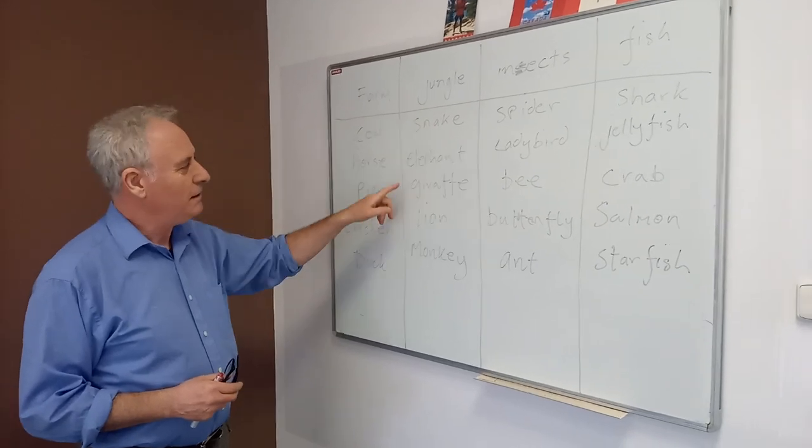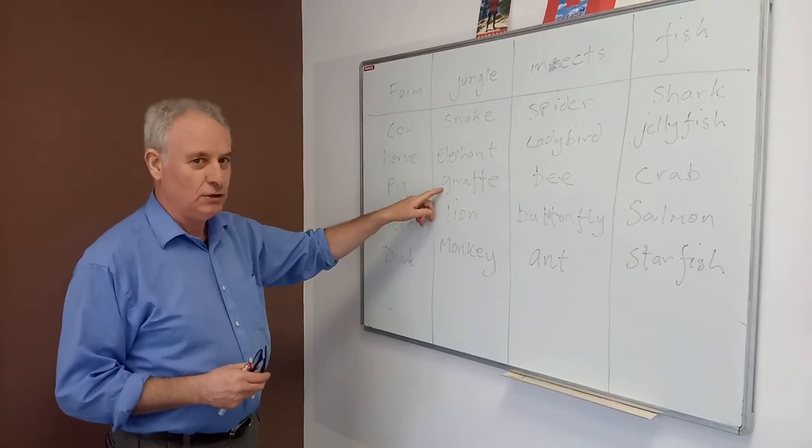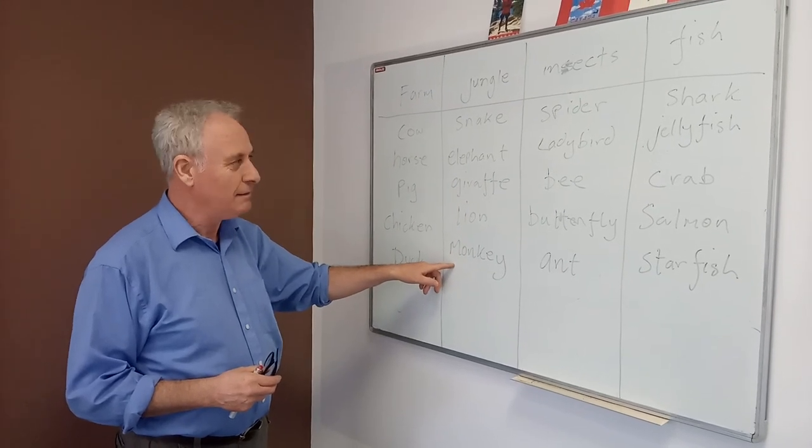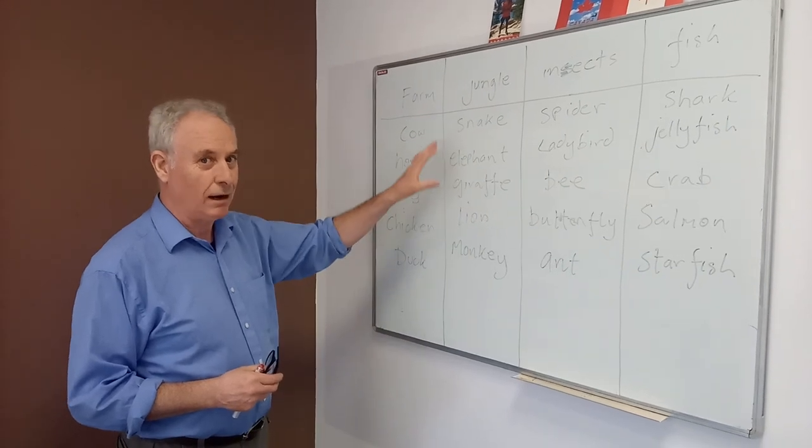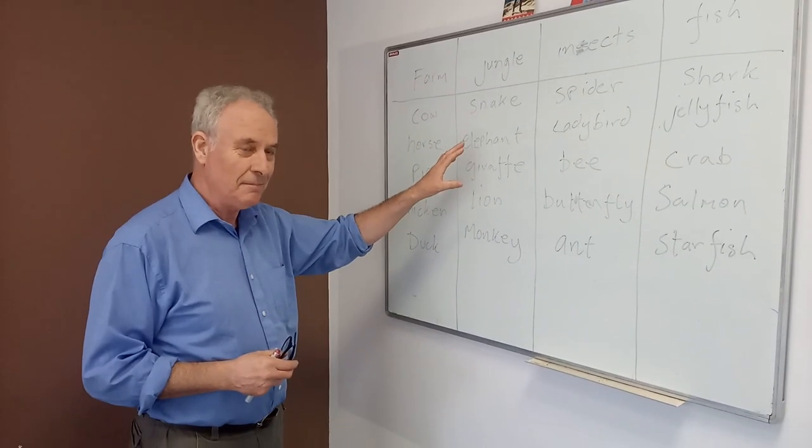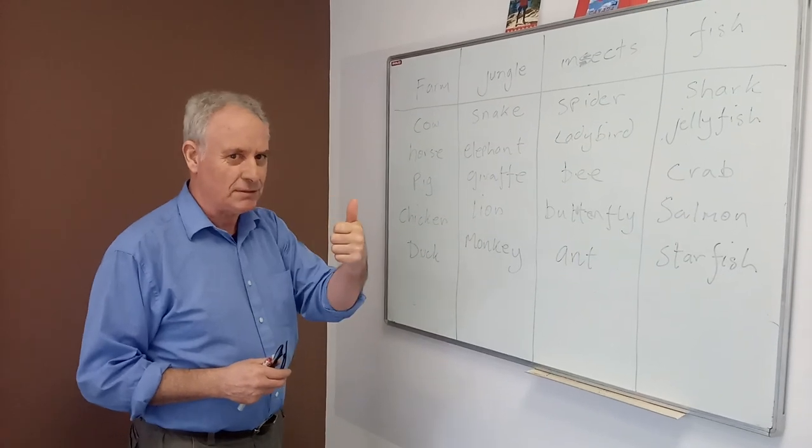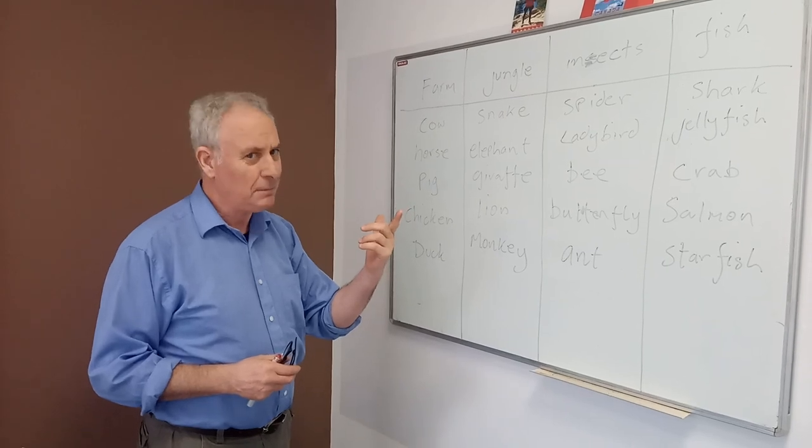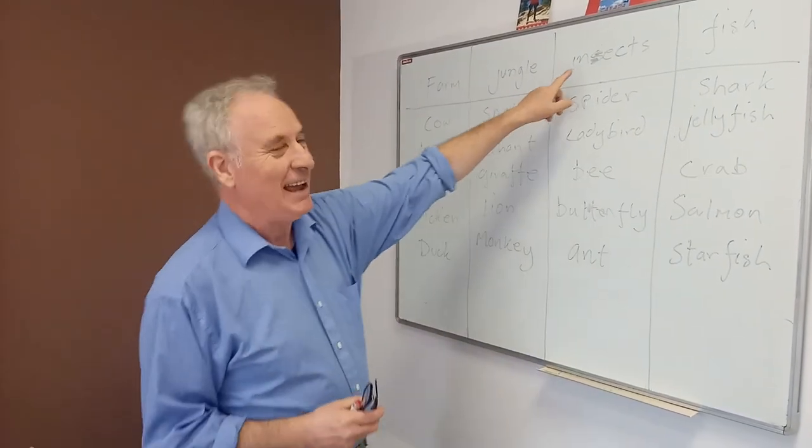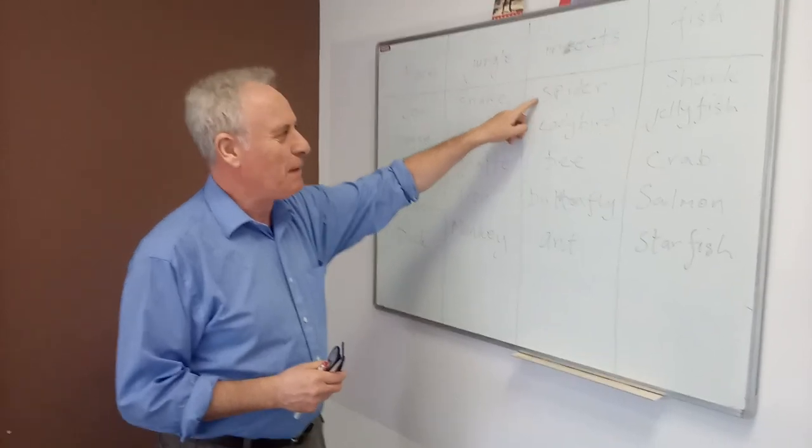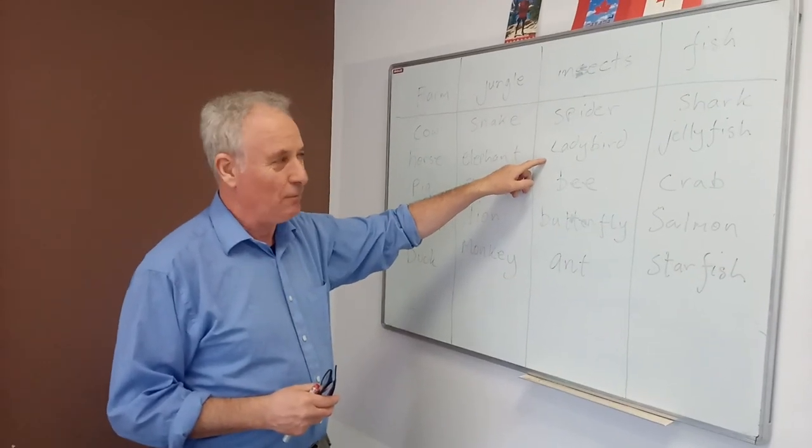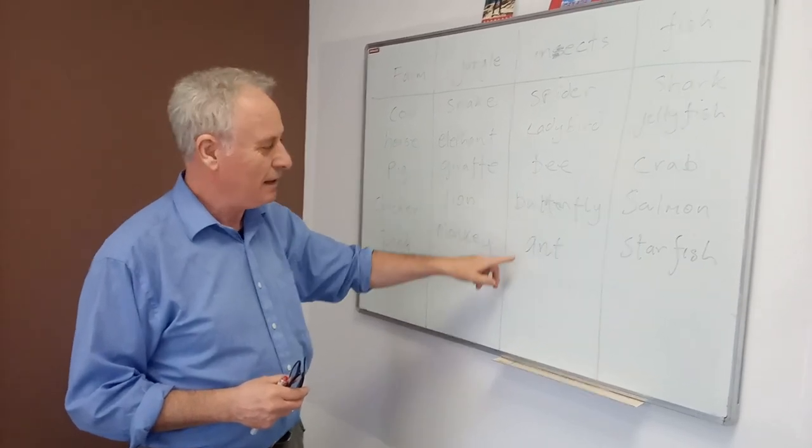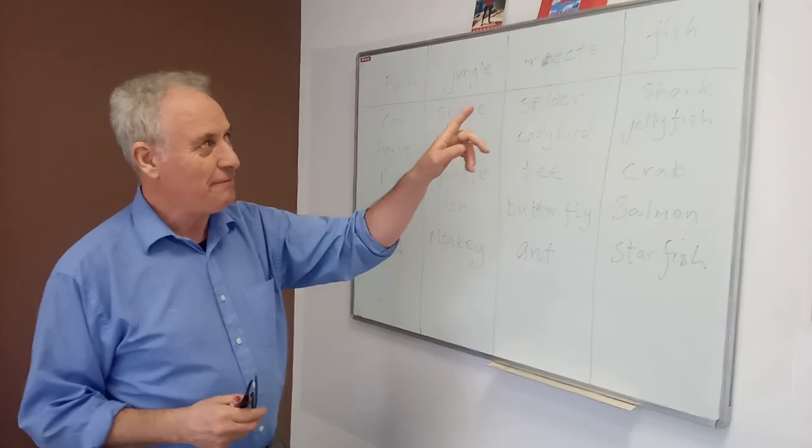Now the jungle. Snake. Elephant. Giraffe. Lion. Monkey. All of these live in the jungle. Did you get a list like that? What else could there be? Rhinoceros. Warthog. Anybody get Warthog? Insects. Spider. Ladybird. I bet you all got that one. A bee. Butterfly. Ant.